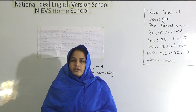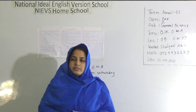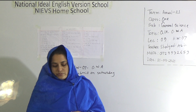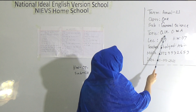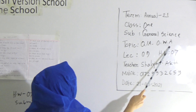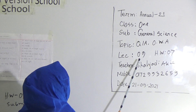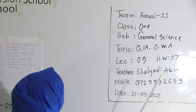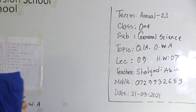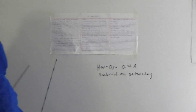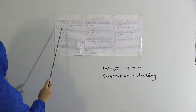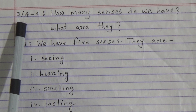Today I am going to take a General Science class for class 1 students. Our today's topic is question answer and one word answer. Today's lecture number 9 and HW number 7. Let's start our class. First of all, we will discuss question answer, then one word answer.